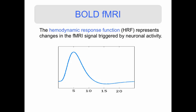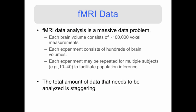This is something that will color the way we analyze data later on and is important to keep in mind. It's pretty clear that fMRI data analysis is a big data problem. Each brain volume consists of roughly 100,000 different voxel measurements, and each experiment consists of hundreds of brain volumes.